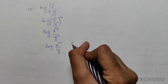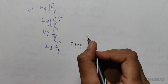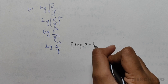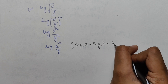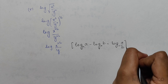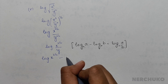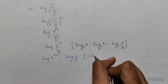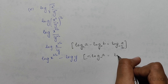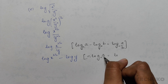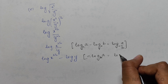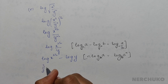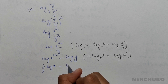That gives me log(x^(3/2) / y). Since it's a division, I apply log a minus log b = log(a/b), giving log(x^(3/2)) minus log y. Applying the formula n·log a = log(aⁿ), I get (3/2)·log x minus log y.